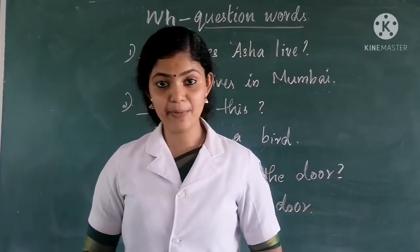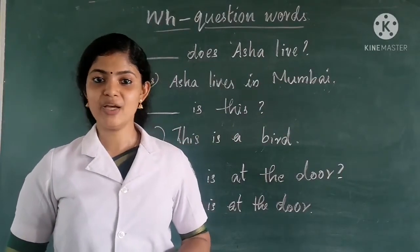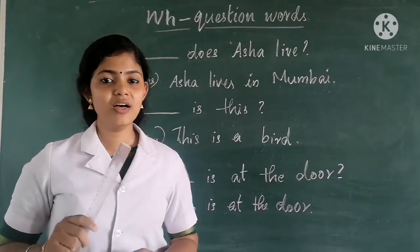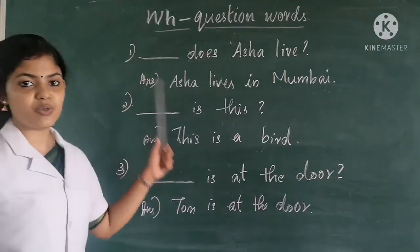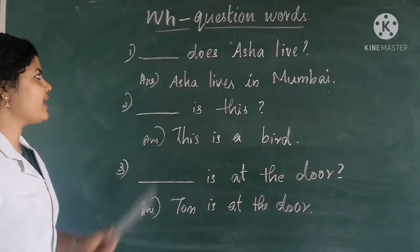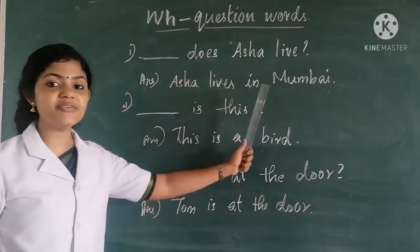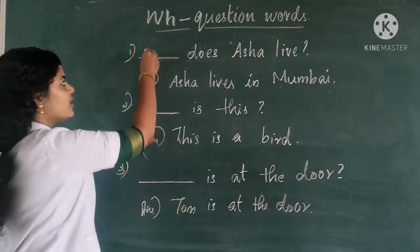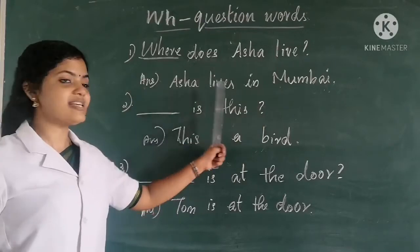Today we learnt WH question words. Now let's do an activity — fill in the blanks with the suitable WH question word. We learnt 5 WH question words: what, where, which, when, and who. Use the answer given to find out the correct question word. First: Dash does Asha live? The answer is — Asha lives in Mumbai. It says about a place, so the question word must be WHERE. Where does Asha live? Asha lives in Mumbai.